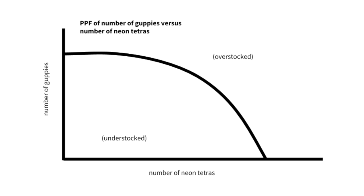What we see is that because our space in the tank is scarce, the tank has a maximum capacity. So, if we add in more guppies, we can't keep as many tetras. Or if we add in more tetras, we can't keep as many guppies. Note that if we have too many fish, we go above the curve, and we have an overstocked tank which is not healthy. If we go below the curve, we have an understocked tank which generally isn't too much of an issue.